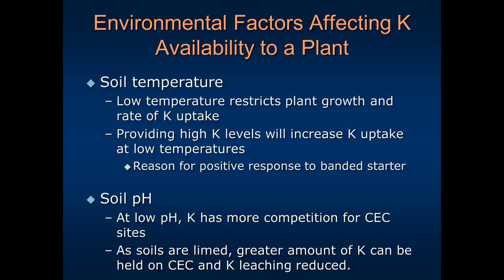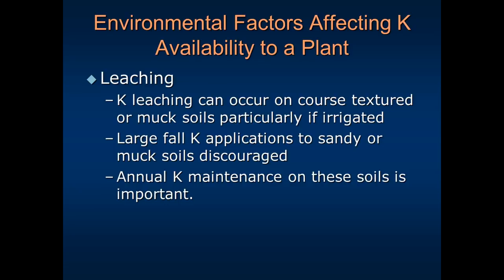Low soil temperatures will restrict plant growth, root growth, and uptake of potassium. High potassium levels in the soil will increase uptake at these low temperatures — one reason we see positive responses to starter or banded fertilizer. When plant roots are slowly expanding, if they can get to a band of concentrated phosphorus and potassium, the plant will respond positively. Soil pH also matters: at low pH or acidic soils, potassium has more competition for cation exchange sites, thus less is available. When soils are limed, a greater amount of potassium can be held on exchange sites and potassium leaching is reduced.